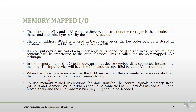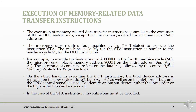We use memory-related instructions for memory mapped I/O. In the microprocessor, we have the 4th machine cycle (M4) and the 3rd T-state to execute this instruction. M4 is equivalent to the OUT instruction in M3 for peripheral I/O. The STA instruction uses 4 machine cycles in the 8085 microprocessor. We send the control signal along with the address.